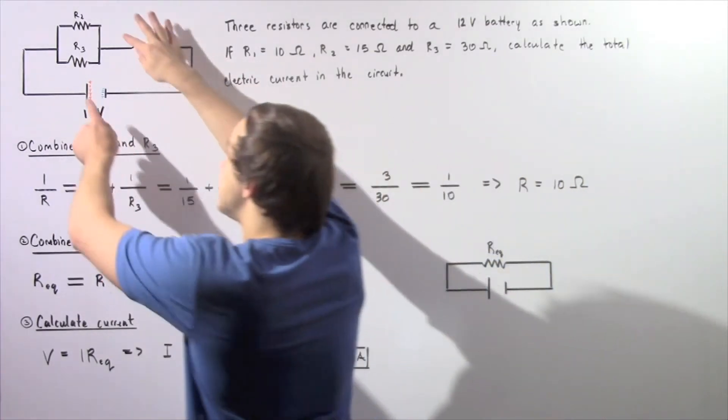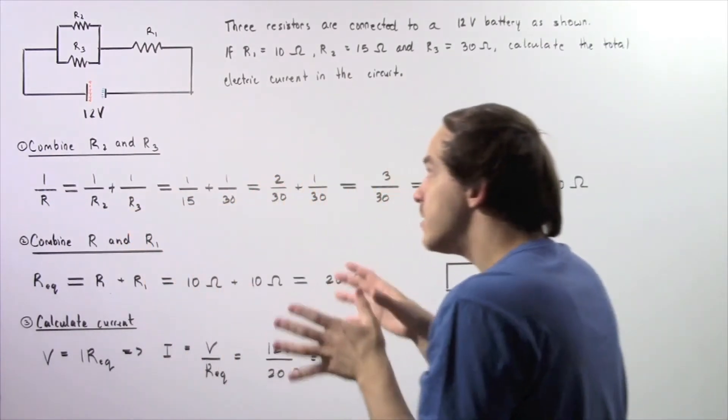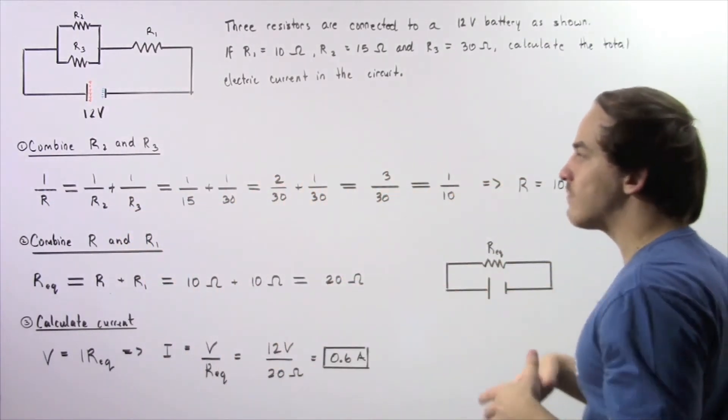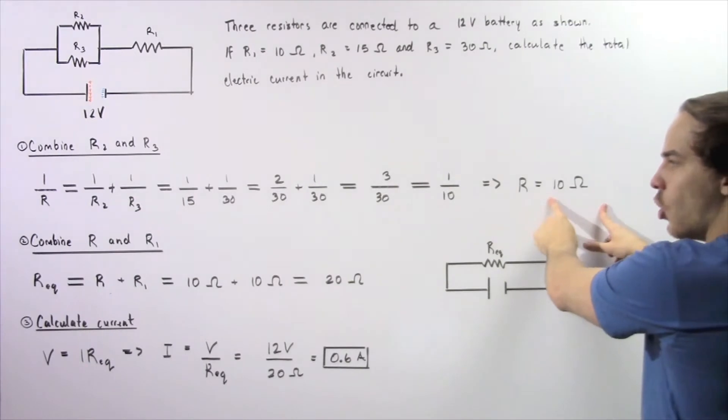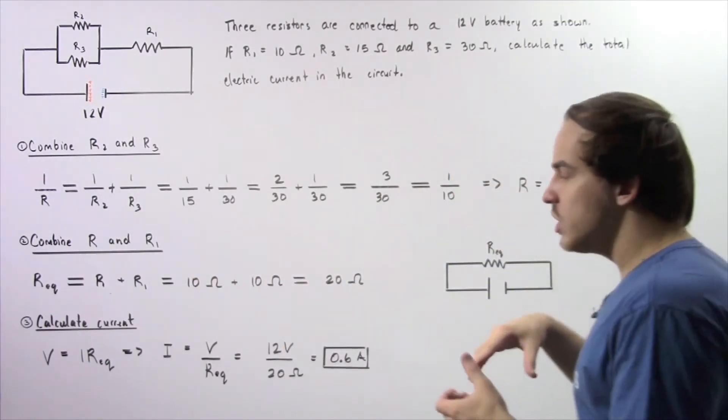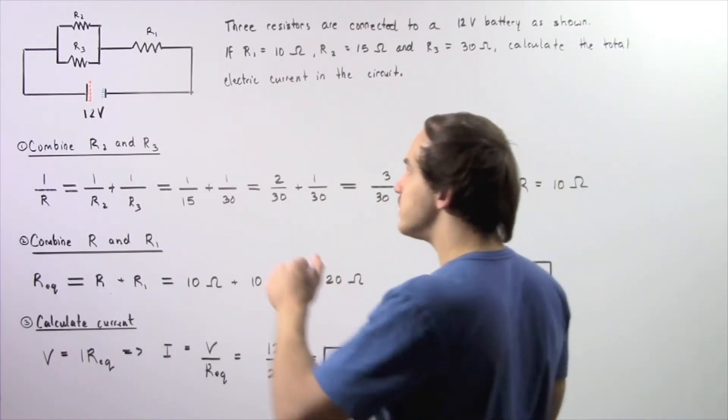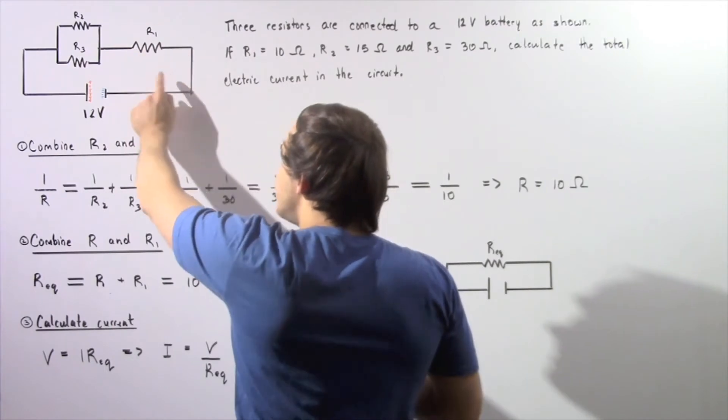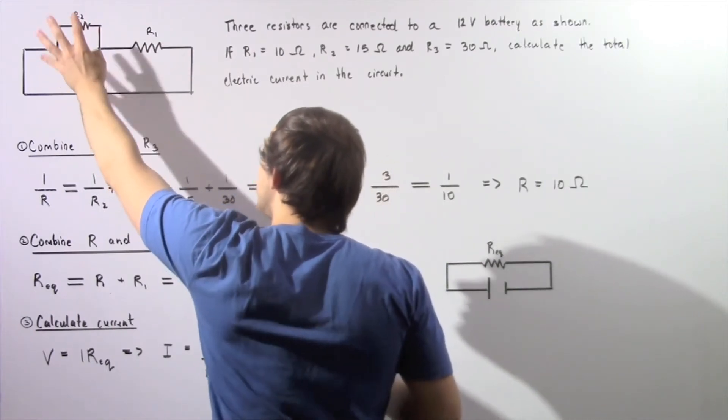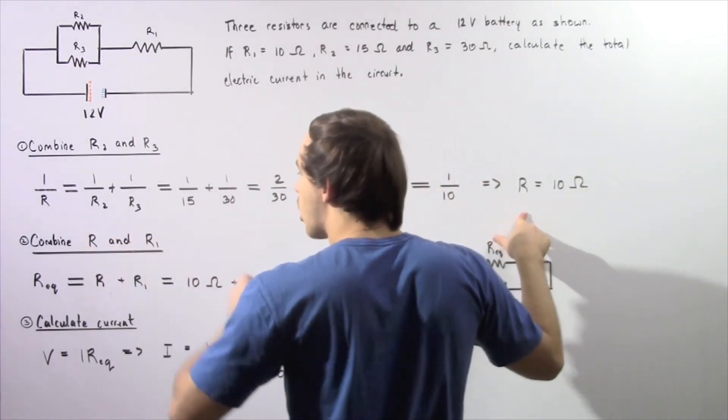So basically, if we combine these two resistors into a single resistor, that single resistor will have a resistance of 10 ohms. Now let's move on to part two. In part two, we now want to combine our two resistors in series. We want to combine resistor R1 and our equivalent resistor given by R.